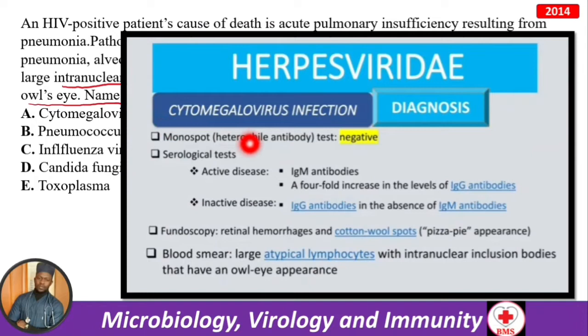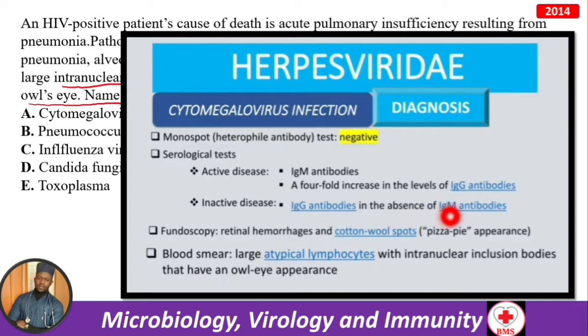For CMV diagnosis: the monospot test will be negative — it is positive in EBV (infectious mononucleosis). Serologically, in active disease you see IgM antibodies and a four-fold increase in IgG; in inactive infection, IgG is present without IgM. On fundoscopy, you see retinal hemorrhages and cotton wool spots — the pizza pie appearance. On blood smear, large atypical lymphocytes with intracellular inclusions showing an owl's eye appearance.